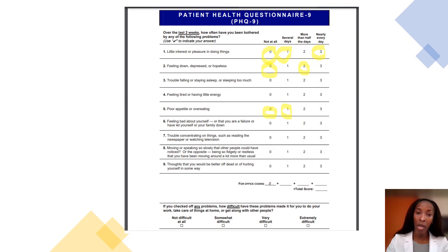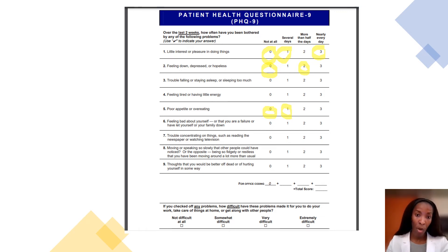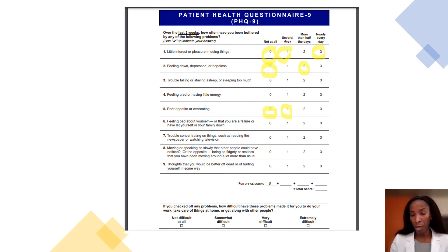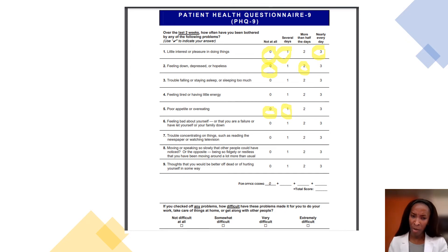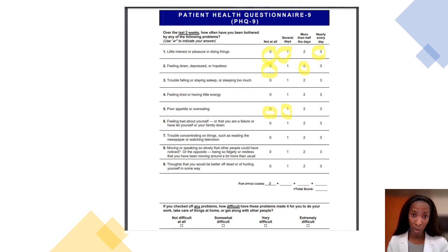Number six asks, over the last two weeks, how often have you been bothered by feeling bad about yourself, or feeling like a failure, or feeling like you've let yourself or your family down? This could mean different things based on your culture — it's not about motivating yourself to do better, but genuinely feeling bad, feeling like a failure, feeling like you've let yourself or your family down, potentially from things you're also hearing around you.